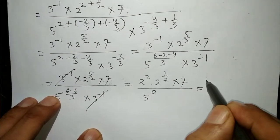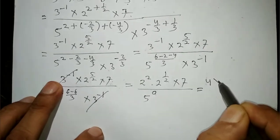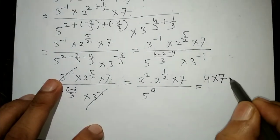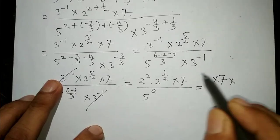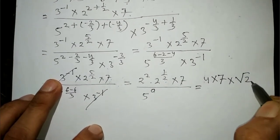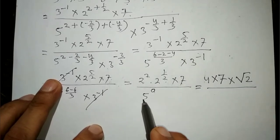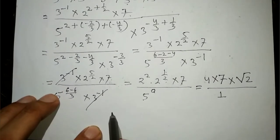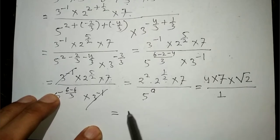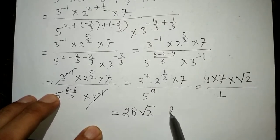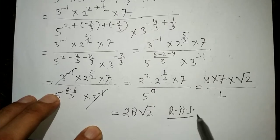Two square को लिखेंगे four into seven into two to the power one upon two (which is √2). किसी भी number की power zero होती है तो उसकी value one होती है। तो यह आएगा: four × seven = 28, into √2 — that is 28√2. R.H.S. proved.